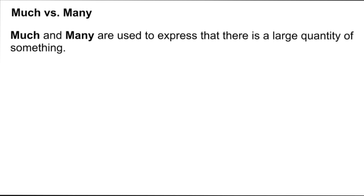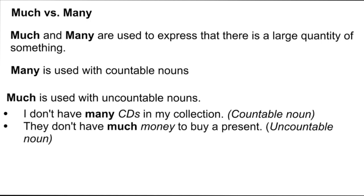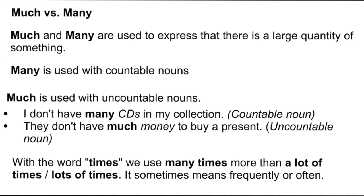'Much' and 'many' are both used to express a large quantity of something. 'Many' is used with countable nouns — for example, 'I don't have many CDs in my collection.' 'Much' is used with uncountable nouns — for example, 'I didn't have much money to buy a present.' With the word 'times' we use 'many times' to indicate frequency, not 'much times'. We can also say 'a lot of times' or 'lots of times'.